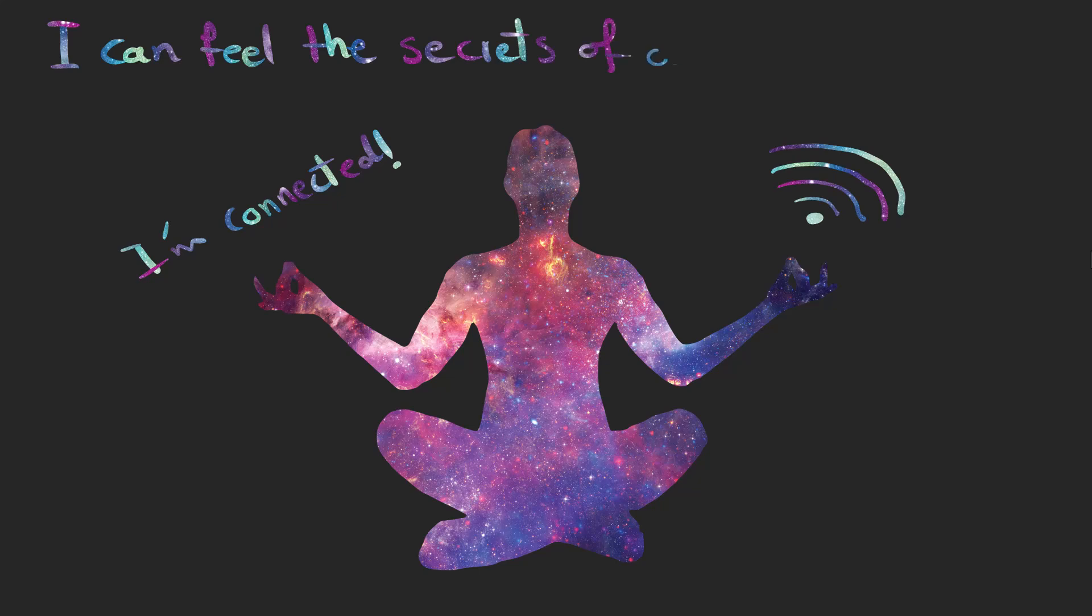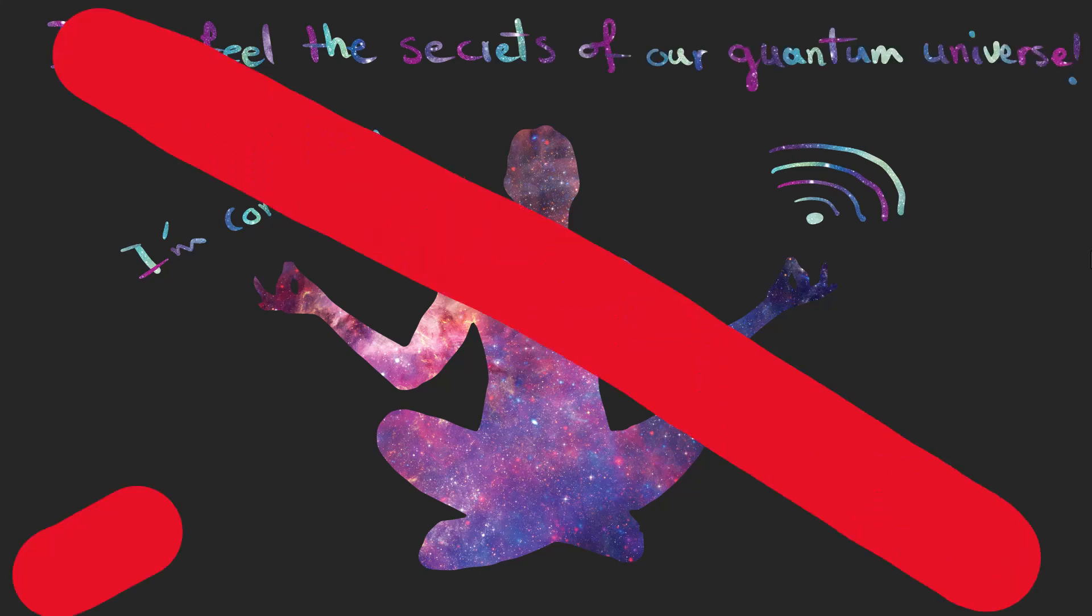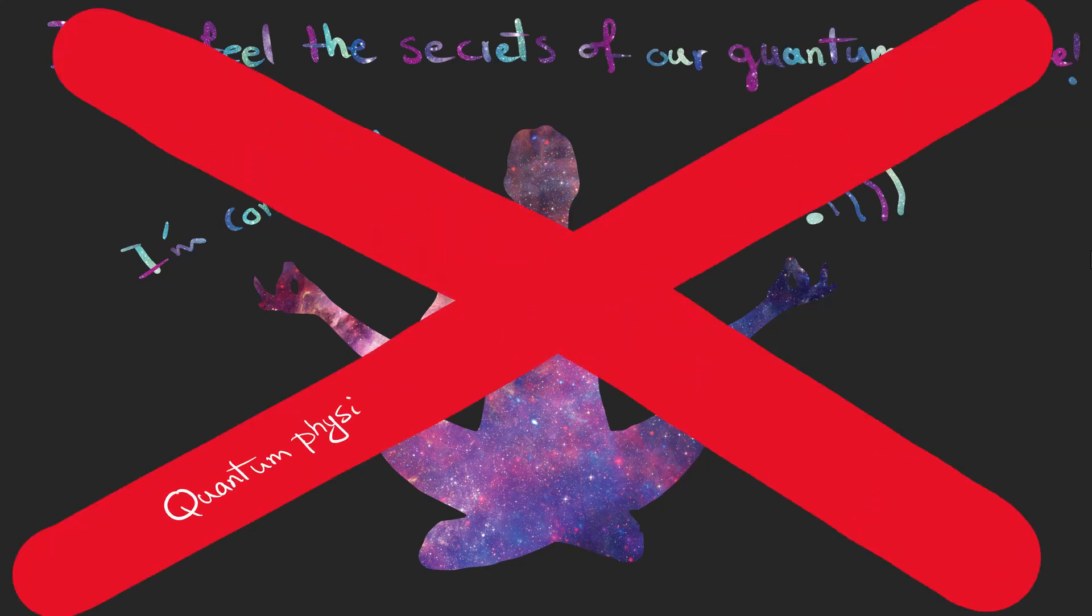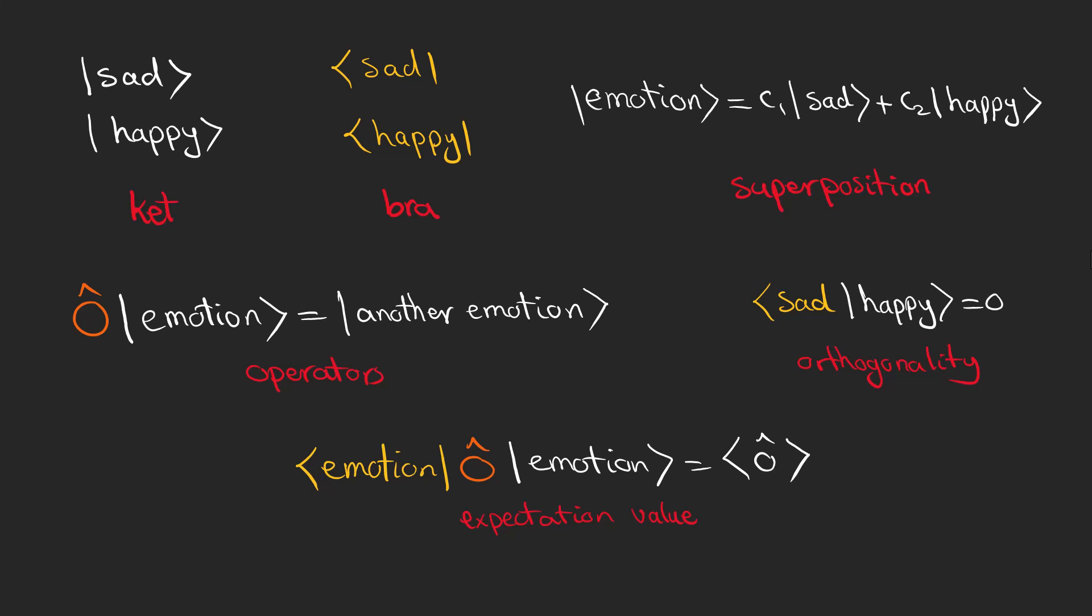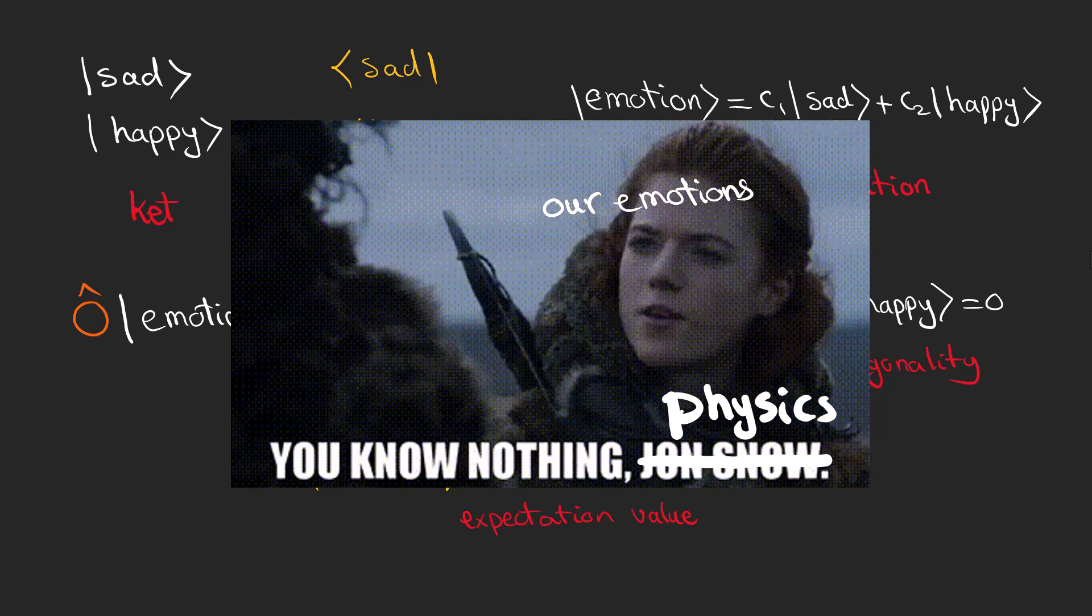Now let me make something clear. Quantum physics has nothing to do with our emotions. In fact, emotions are so complex that physics cannot explain how they work or why they exist yet. The fact is that we use a mathematical framework to talk about our emotions, the same framework we're going to talk about in the rest of the video. But it doesn't mean that our emotions are connected to quantum states. As far as I know, physics knows nothing about our emotions.